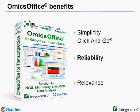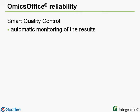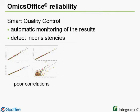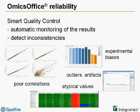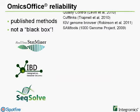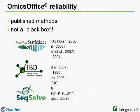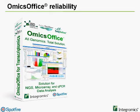The second point is reliability. Your analysis needs to produce consistent and reliable results. OmicsOffice features a unique and smart quality control system which monitors the results to automatically detect inconsistencies like poorly correlated replicates, experimental biases, outliers, artifacts, and unexpected values. Furthermore, OmicsOffice's results are reliable because they are produced by state-of-the-art bioinformatic methods and reference algorithms — not a black box. Published methods are implemented in the OmicsOffice applications for microarray, qPCR, and sequencing data analysis.